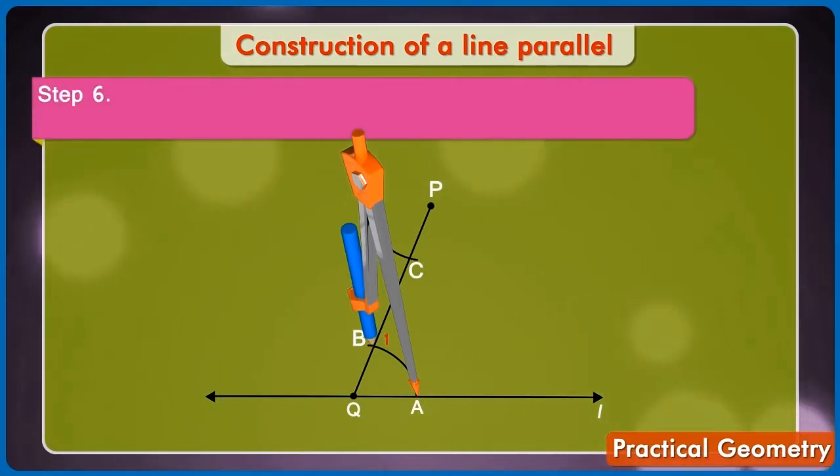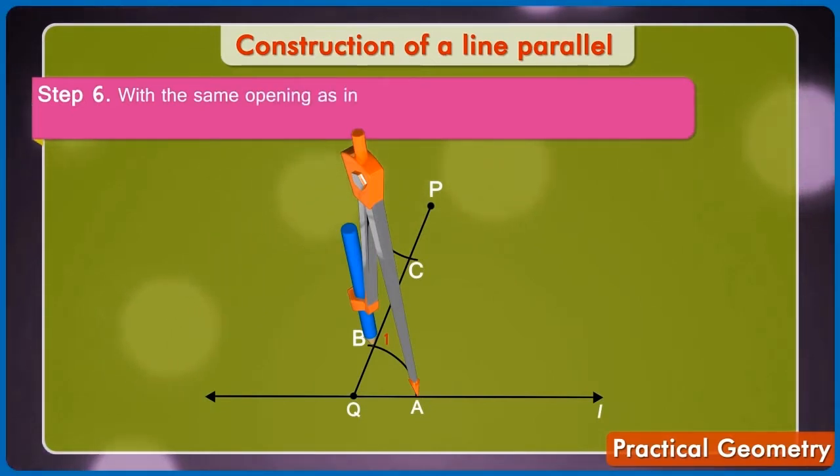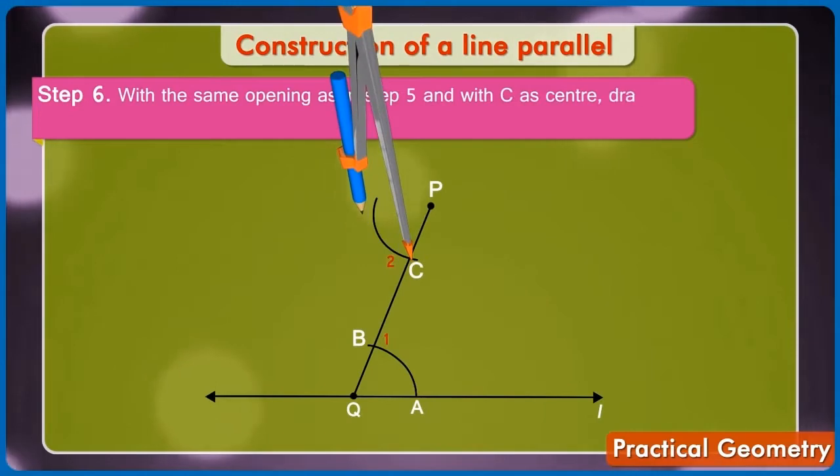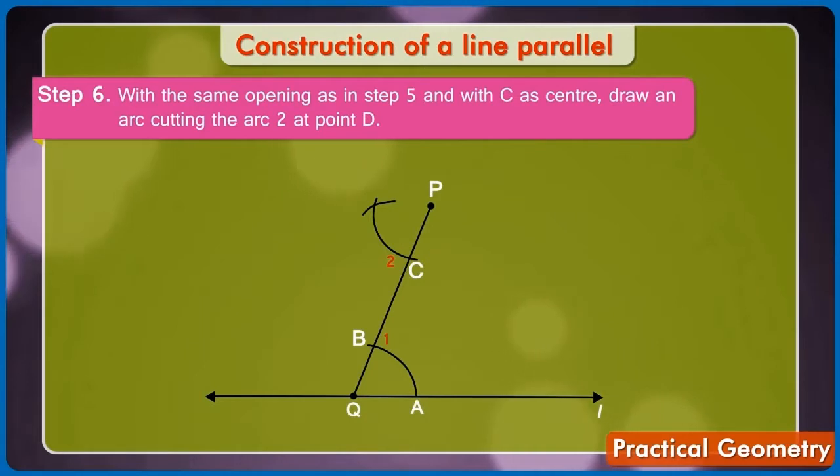Step 6: With the same opening as in step 5 and with C as center, draw an arc cutting the arc 2 at point D.